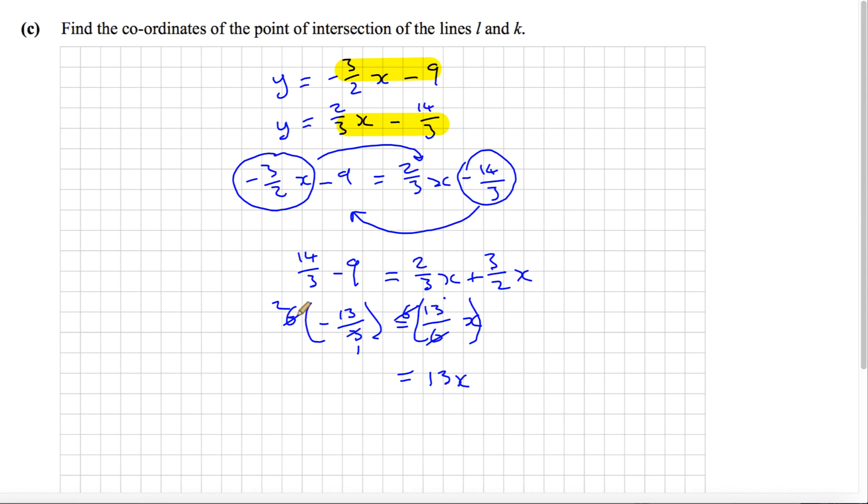So minus 26 equals 13x. I can divide both sides by 13. We cancel here, leaving me with x, and over here minus 26 divided by 13 is minus 2. So x equals minus 2, and that's the end of the question.